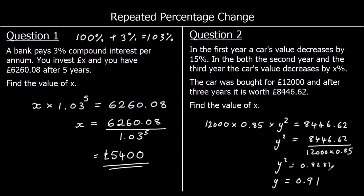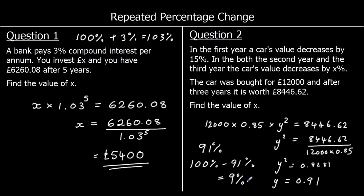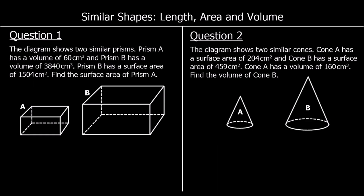So if our multiplier is 0.91, what is the percentage decrease? 0.91 times 100 means that's 91%, so each year we've got 91% of what we had the year before. 100% take away 91% is 9%, so x, our percentage decrease, is 9%.